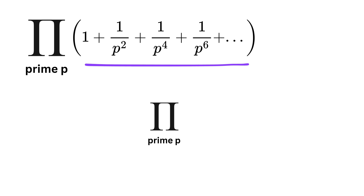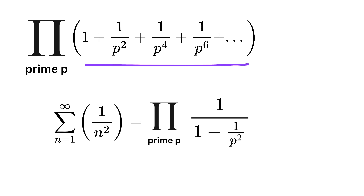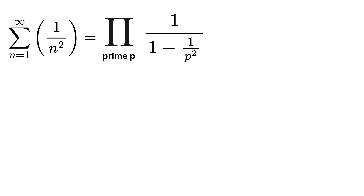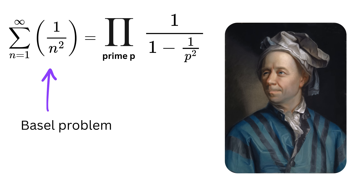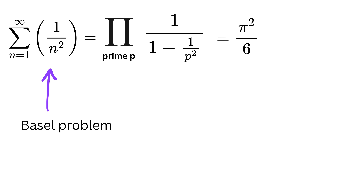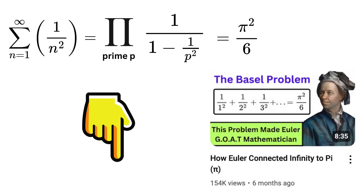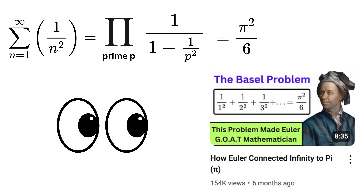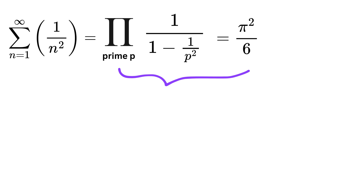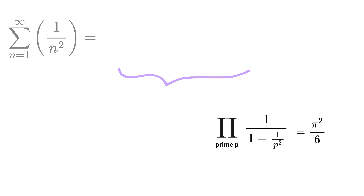Now convert each geometric series to its closed-form formula. The sum of one over n squared equals the product of these geometric sums — this is nothing less than magic. The sum on the left is the famous Basel problem, which made Euler a world-renowned mathematician. Euler showed this infinite sum of one over n squared for all natural numbers equals pi squared divided by six. This means the product over all primes equals pi squared divided by six.